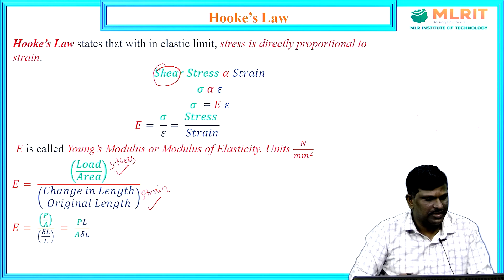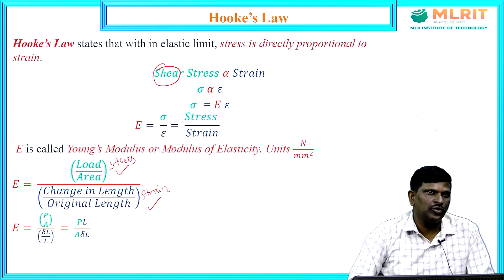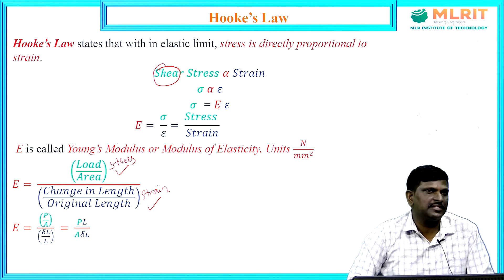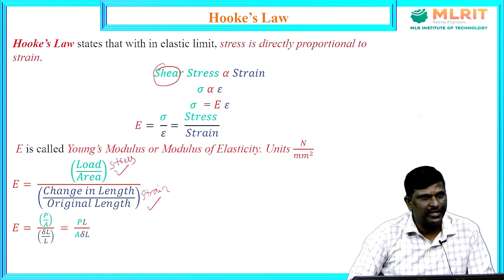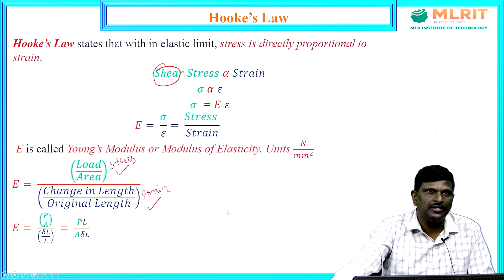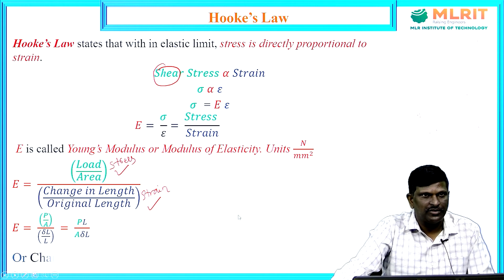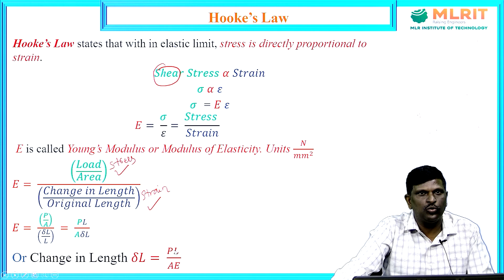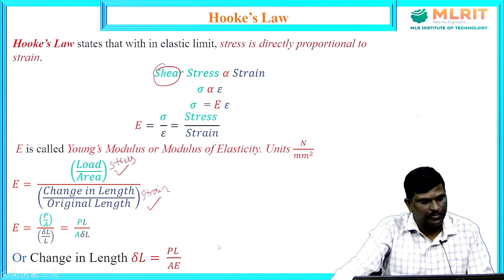Young's modulus can be calculated using the formula for a given applied load, cross section, and length, if you know the change in length. Or conversely, if we know the Young's modulus of the material, without conducting any experiment, for a given load, length, and area of cross section, we can calculate the change in length using the formula: delta L equals PL divided by AE.